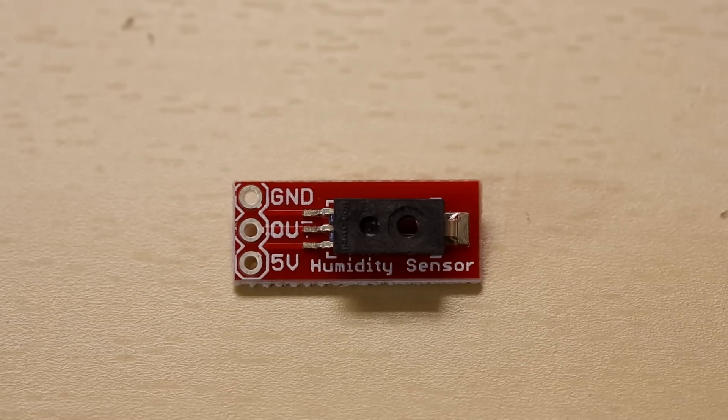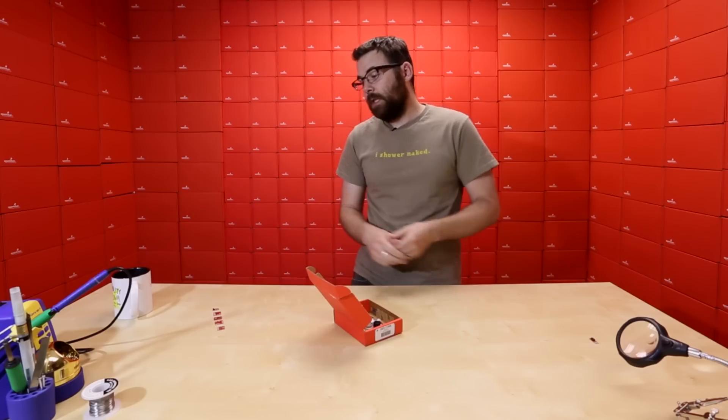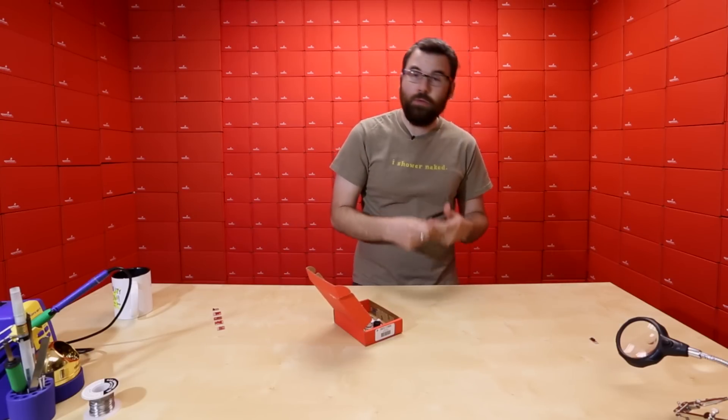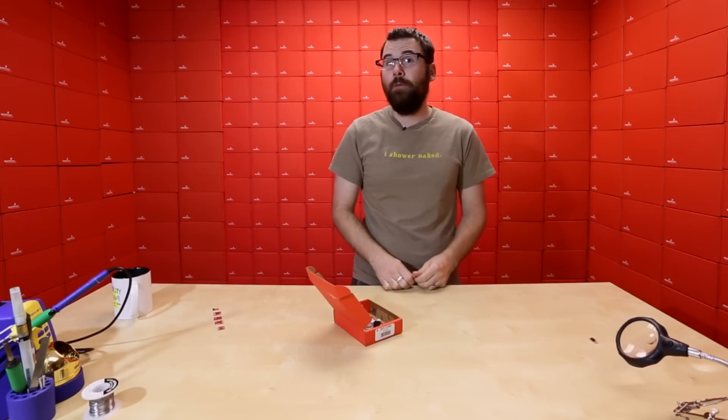This is the HIH 4030 humidity sensor. This has a very simple analog output. Just like the accelerometer, you basically just read the analog voltage out, translate that into a real world value, and you're ready to go.